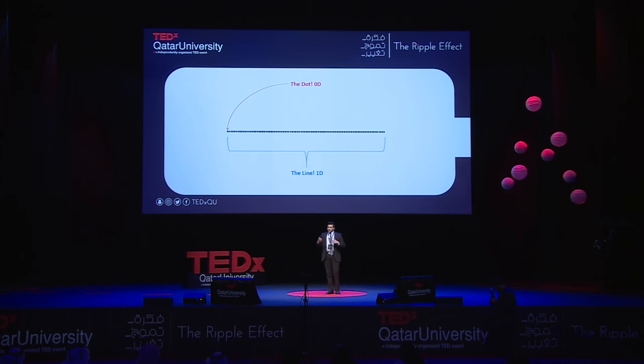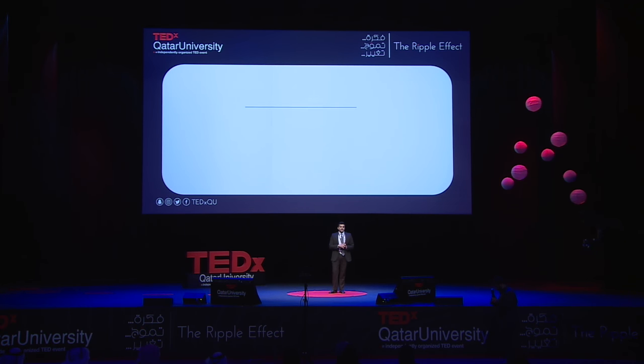Now, let's start off pretty simple. We as humans understand four different dimensions. We understand a dot, which is 0D. That dot could go on to become a line, which is 1D. That line could become a plane or a square, which is 2D. And that square can eventually become a 3D object. So you go back and forth between these dimensions.